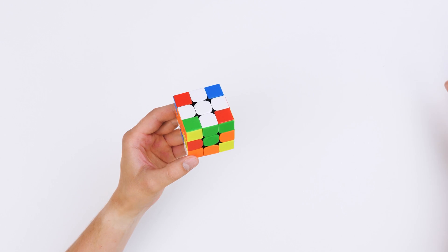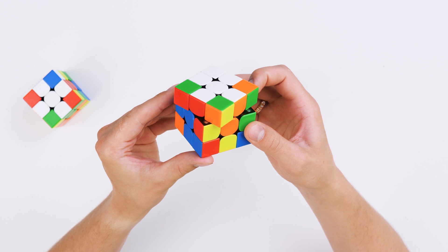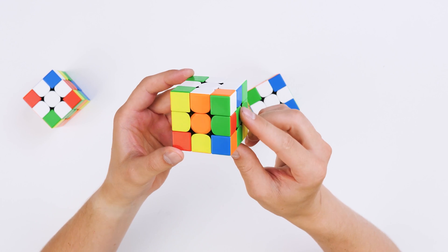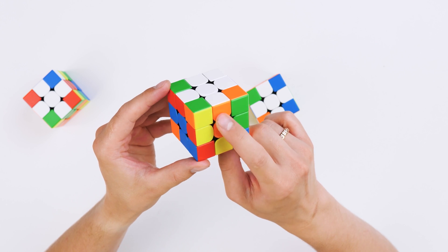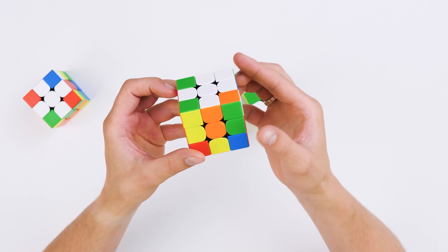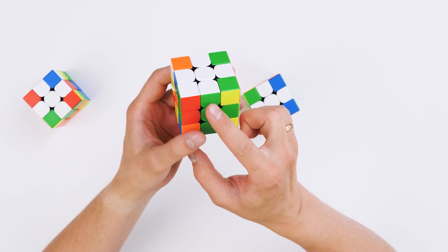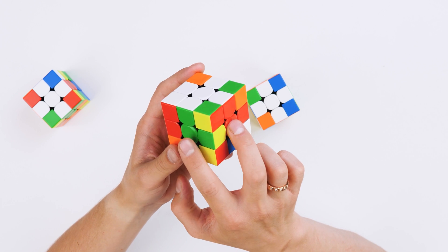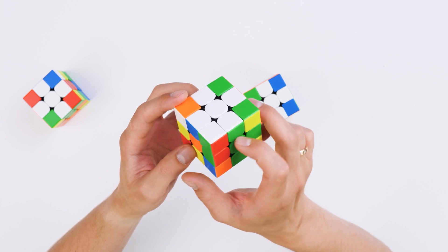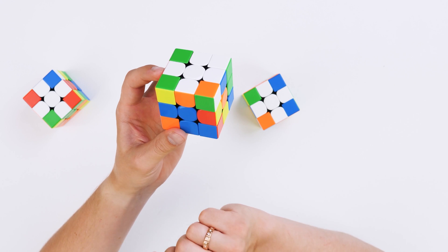But there are other situations. For example, here's one of them. We turn the face, but not all the colors match. If there is only one detail right, this is not enough. We need to keep turning the side until we get at least two parts right. Here we have two details coincided, red and white. They can have different colors, in my case this. These two parts don't match.